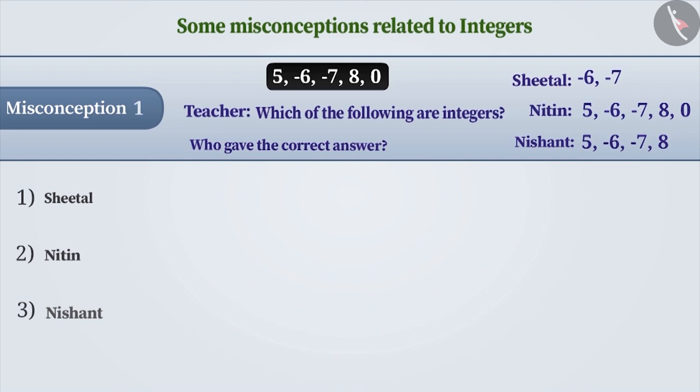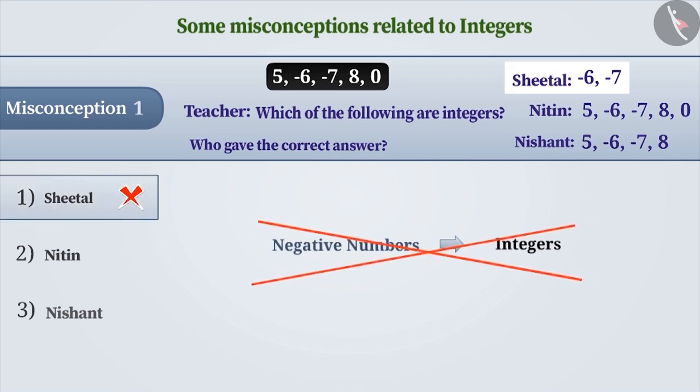Many times, only the negative numbers are considered as integers. With this understanding, Sheetal answered minus 6 and minus 7. This is wrong. Hence, option 1 is the wrong answer.